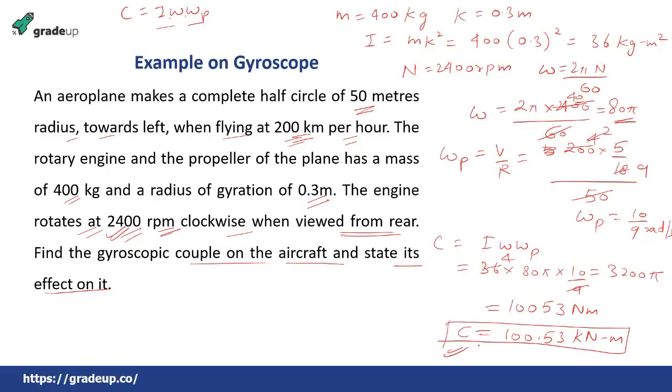Now, it is also asking about the effect. And it is saying that the engine is rotating clockwise when viewed from the rear. This is the view again. Rotating clockwise when viewed from the rear. And it takes a turn towards left. This is written that it takes a turn towards left. So this takes a turn towards left. This is the active gyroscopic couple. This is the reactive gyroscopic couple. So the reactive gyroscopic couple becomes like this. That means the nose raises and the tail dips. Simple.